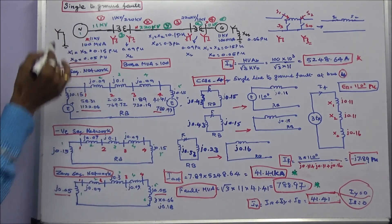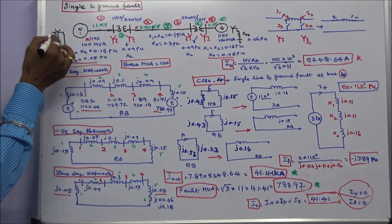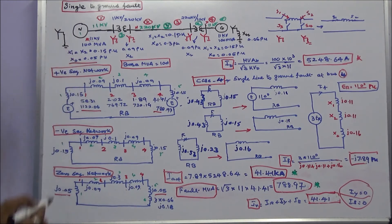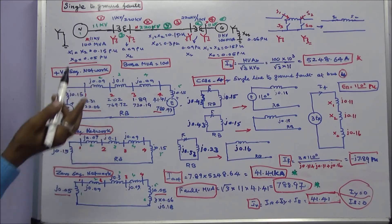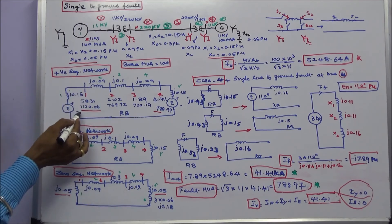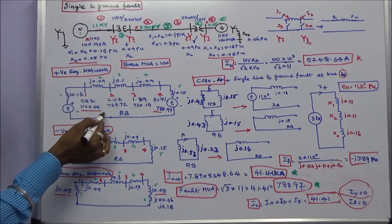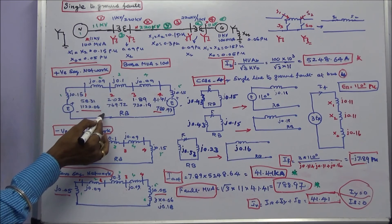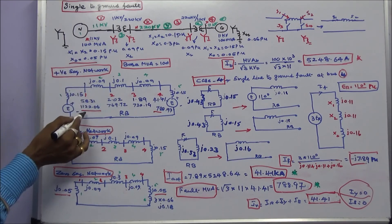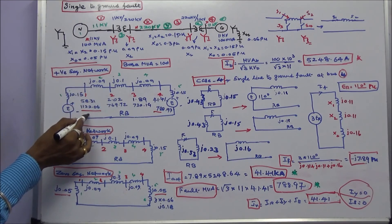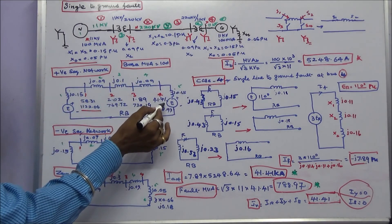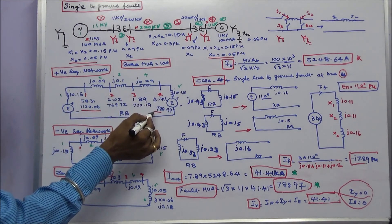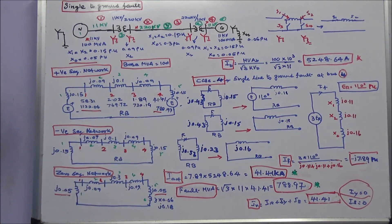This is simply ground and neutral. There is no reactance between neutral and earth. In that condition, fault current is 58.31 kilo amps and fault MVA is 1122.06. There is no reactance, so the current is very high and fault MVA is also very high. When we add reactance, the current is reduced and fault MVA is also reduced. With this I conclude my lecture. Thanks for listening.